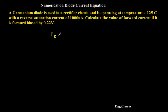ID is equal to IS into bracket e to the power VD divided by eta into VT minus 1. So this is the expression for the diode current.